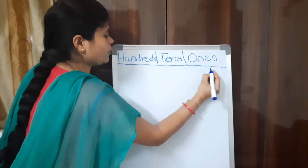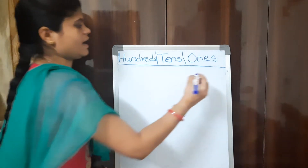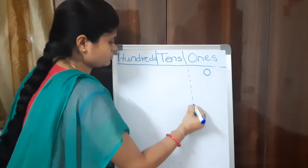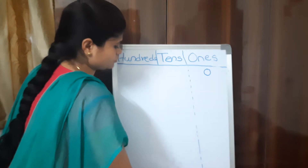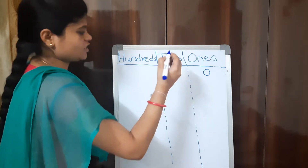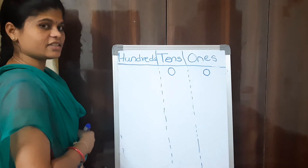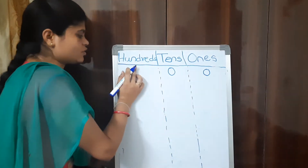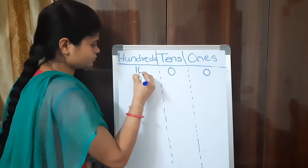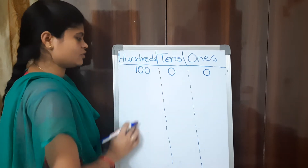In 100, how many 1s do we have? Zero 1s. How many 10s? Zero 10s. How many 100s? One hundred, so we write 1 in the 100s place. This is how we write 100 in place values.